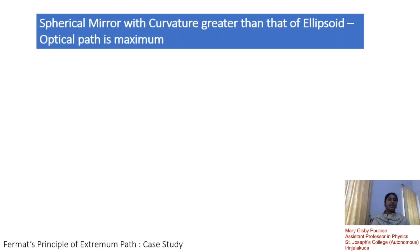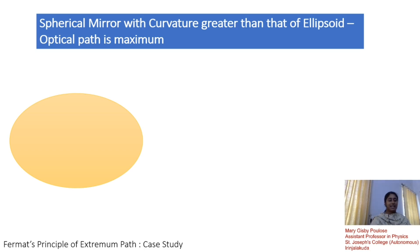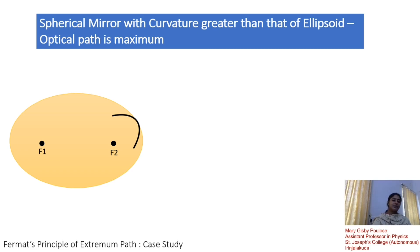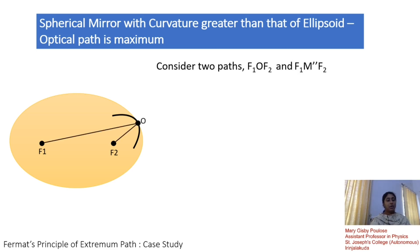In the next case, we have a spherical mirror with curvature greater than that of an ellipsoid, where the optical path becomes a maximum. For that, let us take into consideration an ellipse with focal points f1 and f2. We have matched a spherical mirror of greater curvature with the edge of the ellipse, and light is made to fall on two points of the spherical mirror. We get two paths: f1-O-f2 and f1-m''-f2.